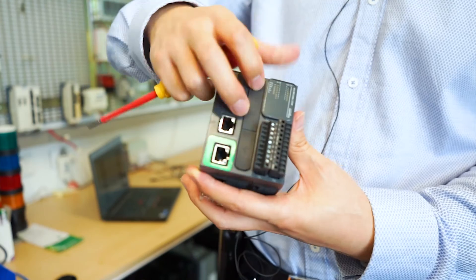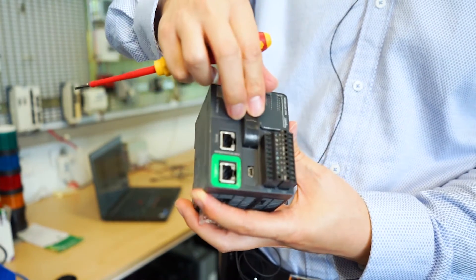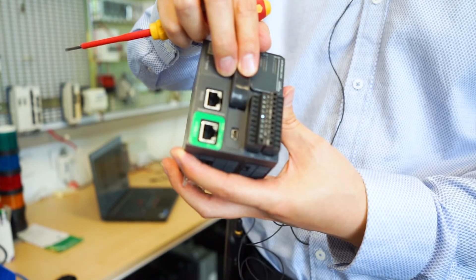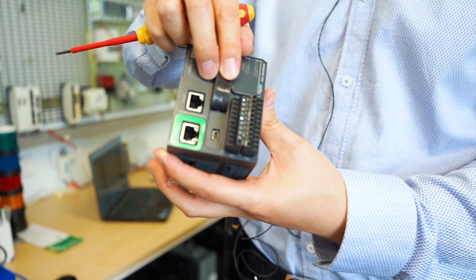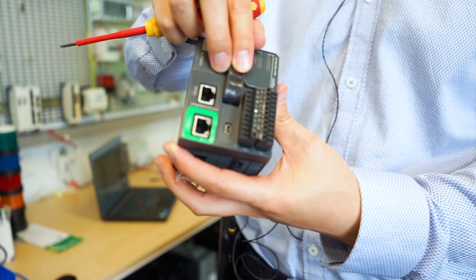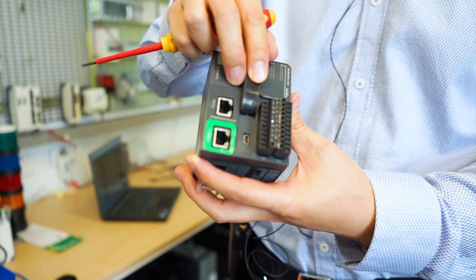And next, we can see down the bottom, we have a mini-USB port. This mini-USB port can be used to transfer the user application from our software, SoMachine Basic to this controller.